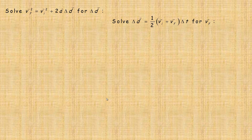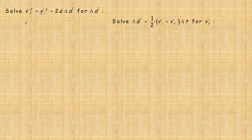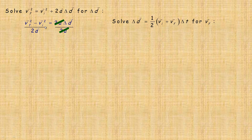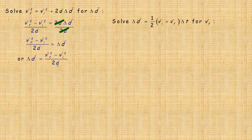Flipping over to the next page — two more examples. We're going to take vf squared equals vi squared plus 2a delta d and solve for delta d. I want to get that 2a delta d term alone, so let's subtract initial velocity squared from both sides — bringing it over to the left side as minus vi squared. Then to solve for delta d, divide out 2 times the acceleration, or 2a. These divide out, and there's nothing to cancel on the other side. So delta d equals final velocity squared minus initial velocity squared, over 2a.